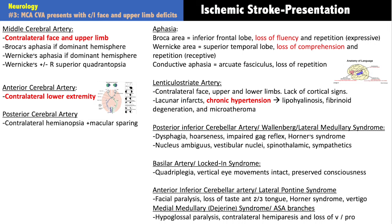Because the internal capsule carries fibers for the face, upper limb, and lower limb, lenticulostriate infarcts can produce a mixed picture affecting all of these. Critically, they lack cortical signs — no hemi-neglect, no Broca's aphasia. These are your lacunar infarcts, classically associated with chronic hypertension. Lipohyalinosis occurs — lipid deposition in these small vessels leads to fibrinoid degeneration and very small microatheromas causing ischemia, driven by very high pressures.